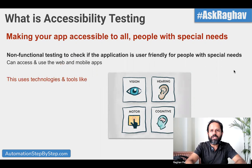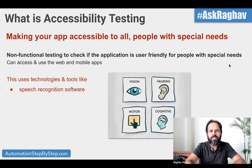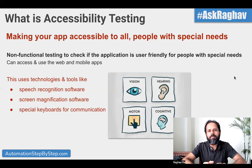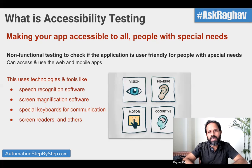Accessibility testing is a non-functional testing type. We can use tools like speech recognition software, so a person with visual issues can just speak and the software understands and takes commands from the user. There can also be screen magnification software which can zoom the screen and make it easily readable for people with visual impairment. Special keyboards are also important — if a person is not able to use the mouse, they should be able to use the keyboard. Screen readers and other tools and technologies also help ensure the application can be used by people with special needs.